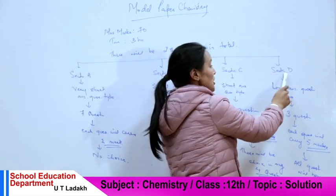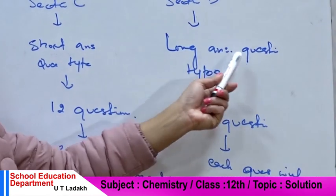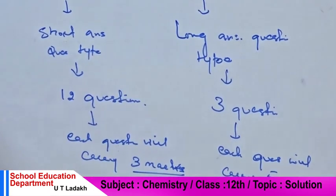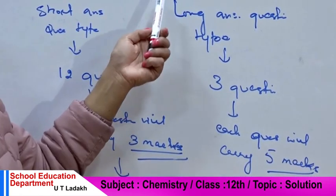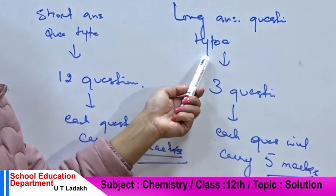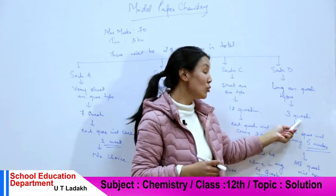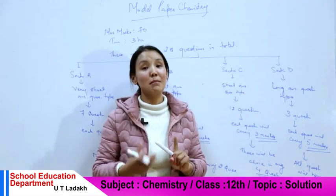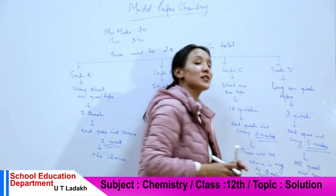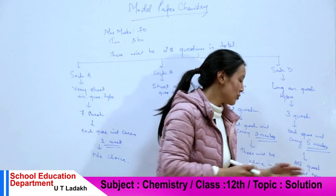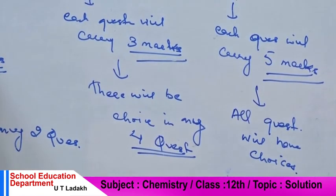In the last section, Section D, you have a long answer question type with maximum marks. In total, you have three questions — long answer questions — and each carries five marks. But you have a choice; out of all three questions, you have a choice.